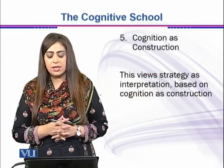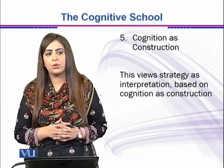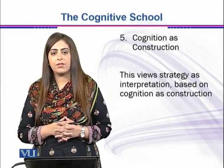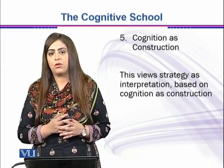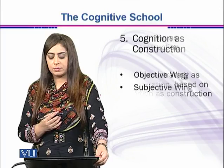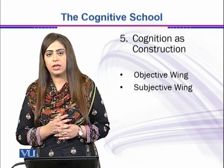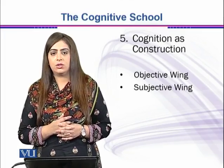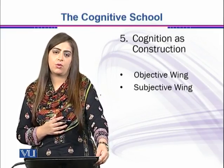Construction is this view strategy as the interpretation based on cognition as construction. As I have already told you in a previous video, reality can be different for someone, and that someone can realize something which is imaginary for another person — there is a difference in the construction of reality. So reality is usually seen in two parts: objective and subjective. There are two wings of discussion in connection to reality: one is the objective wing and the other is the subjective wing.